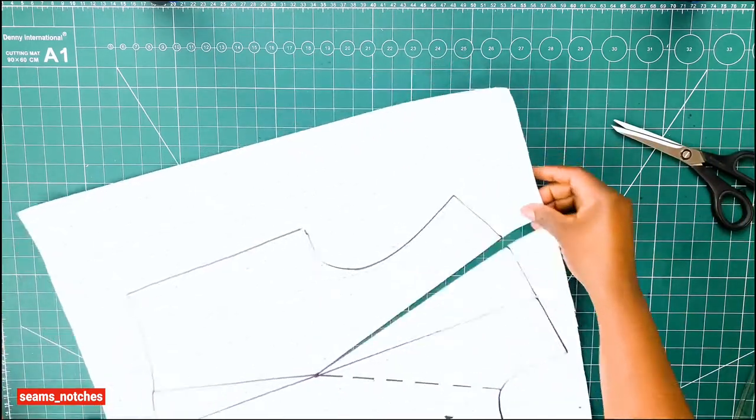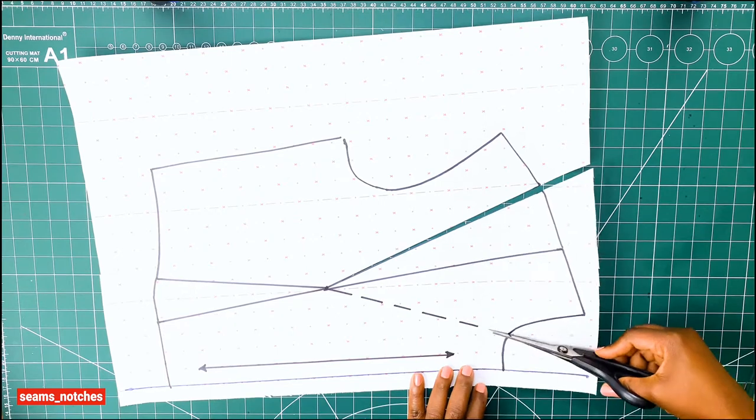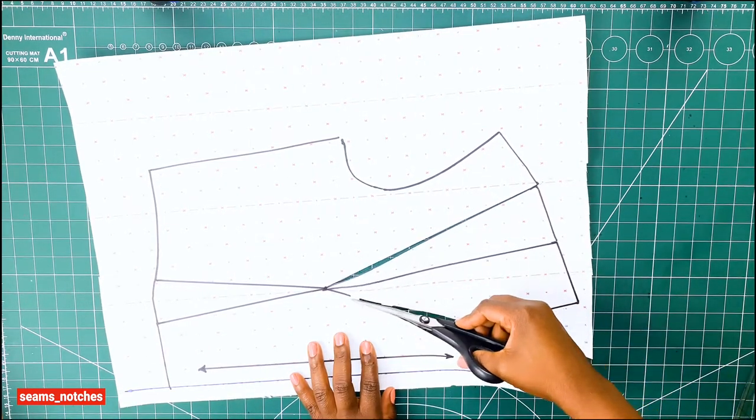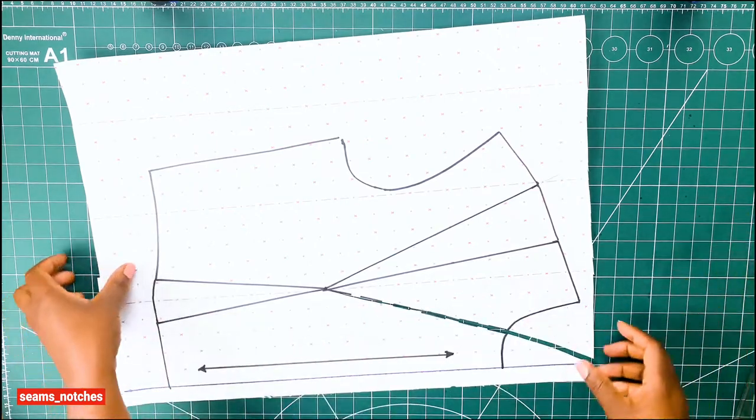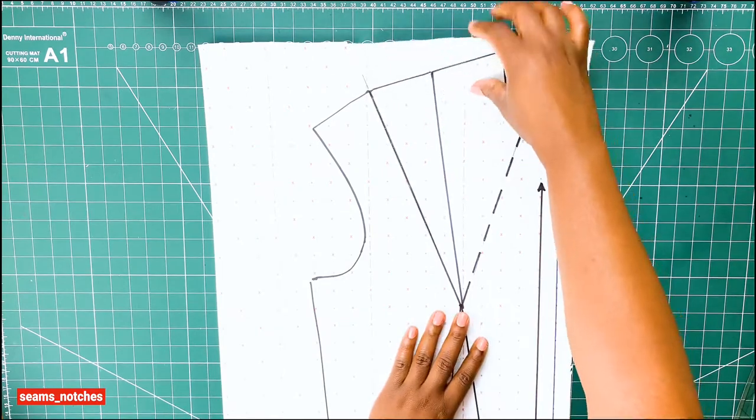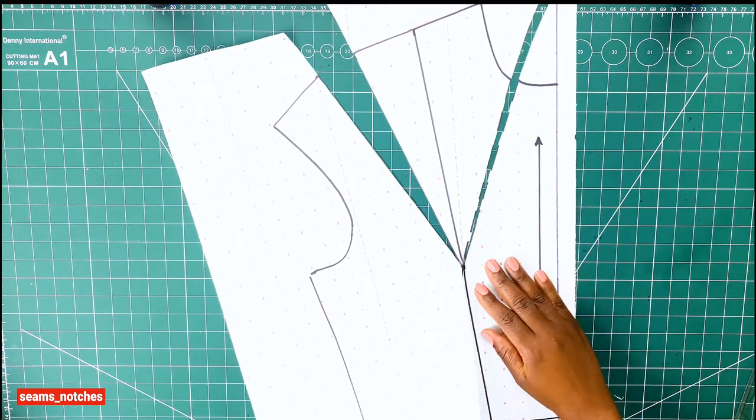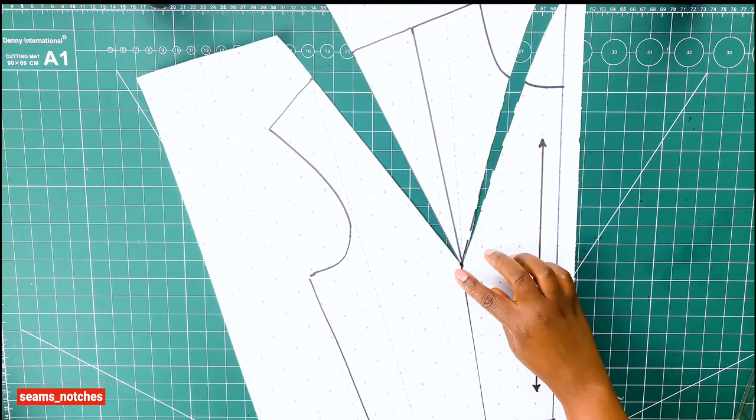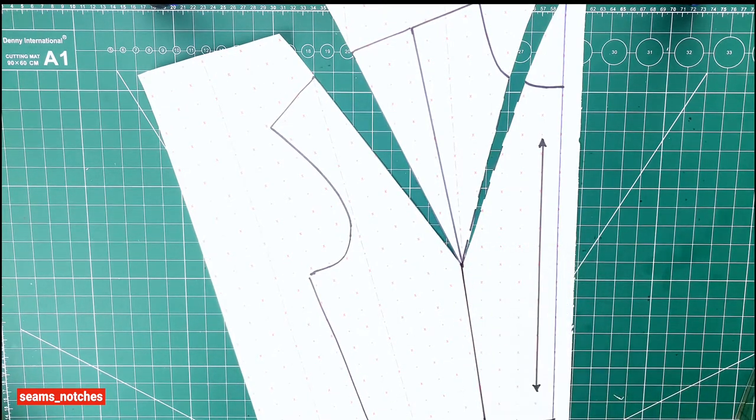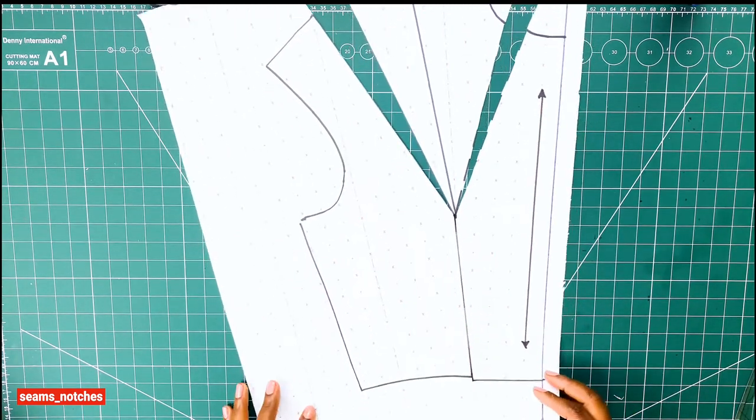The next step will be to slash open the neck dart line. Now that all our dart lines are slashed open, we need to proceed to close in the waist dart and the shoulder dart. At this point, we need to be very careful because our paper is a bit fragile. We need to get our sellotape to close in our waist dart and shoulder darts.